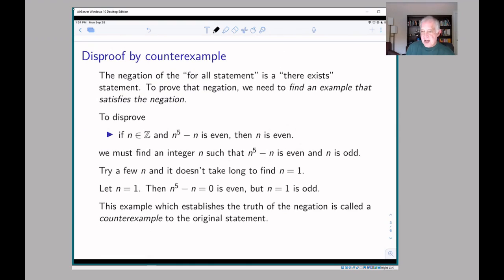One way to find an n is to try some. If you try n equals one, then you see that n to the fifth minus n is even because it's zero, but n itself is odd because it's one. So it didn't take us very long to find an integer that satisfied the condition, namely n equals one.